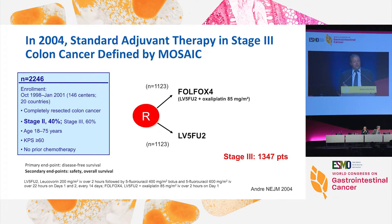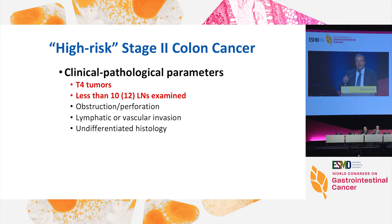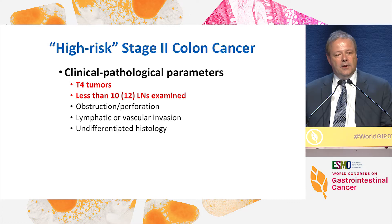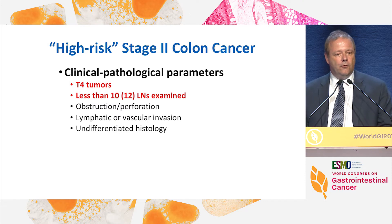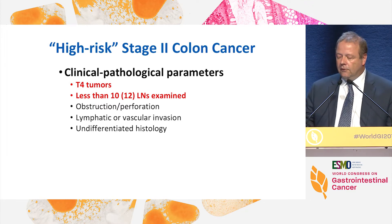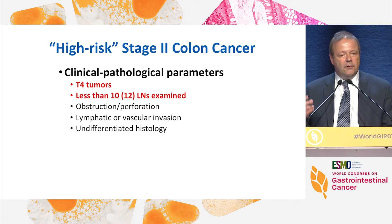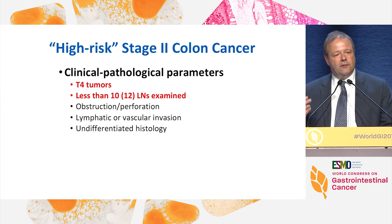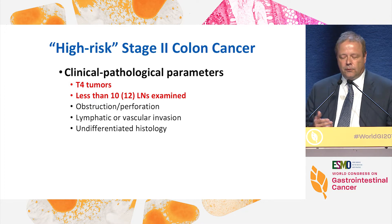The QUASAR result is potentially contaminated by patients with stage three disease who were included. We do have data for oxaliplatin-based therapy from the MOSAIC study, which set the new standard of care for stage three disease. In that study, about 20 to 40 percent of patients were actually stage two cancers, and they identified so-called high-risk stage two colon cancers based on clinical and pathological features — most importantly T4 lesions and fewer than 10 or 12 lymph nodes.